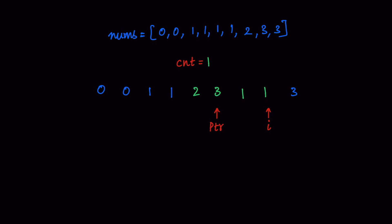After performing the swap, the i pointer is incremented again. After incrementing, we can see nums[PTR] equals nums[i] and count equals 1. So PTR is incremented by 1, count is updated to 2, and the swapping operation takes place — the swapping of 1 and 3. The swapping is completed. Once the swapping is completed, we have reached the end of the nums array. Finally, we return PTR plus 1.